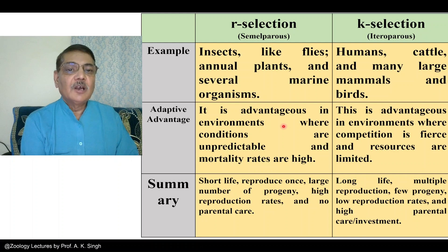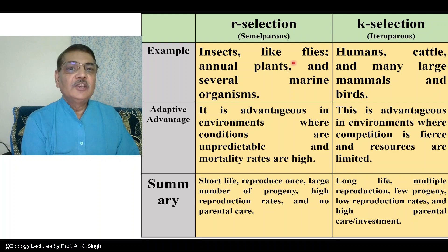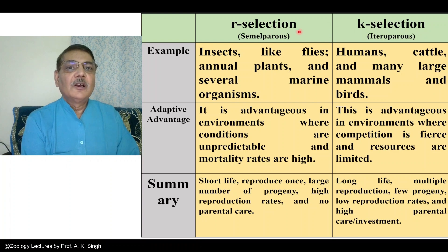However, there are several organisms in which these two conditions may not be met. For example, consider the mango tree — it survives for a very long period of time, survives for several years, and almost every year gives fruits. Hundreds of fruits can be obtained from a single plant. So in the case of mango, neither R selection nor K selection strictly applies. These two situations are applicable for some kinds of animals belonging to invertebrate or vertebrate groups, but they are not applicable for every kind of organism. These are two major reproductive strategies shown by several forms of organisms.